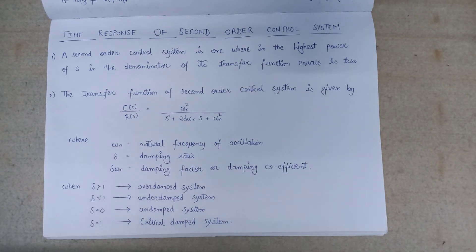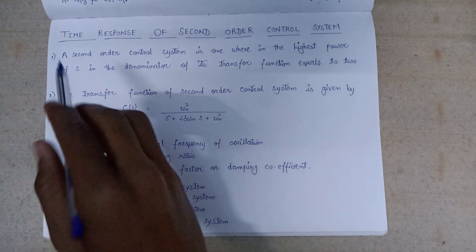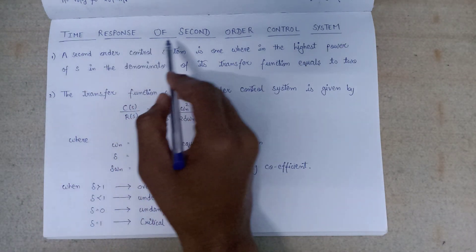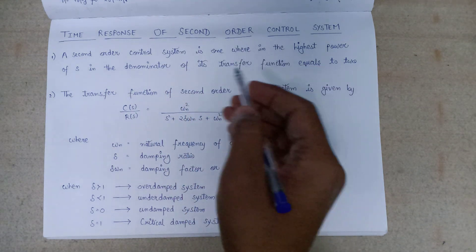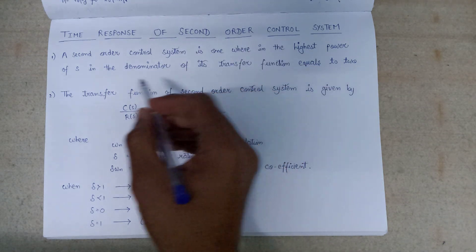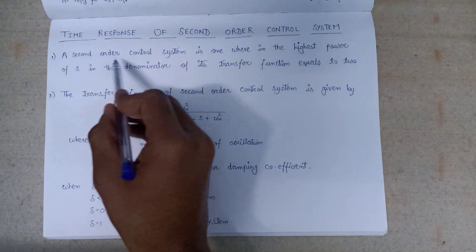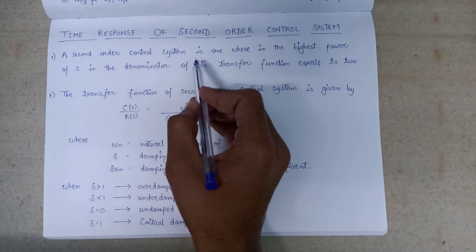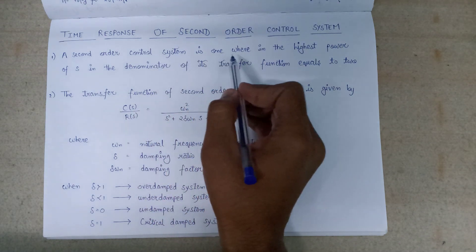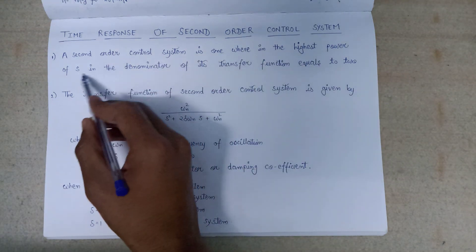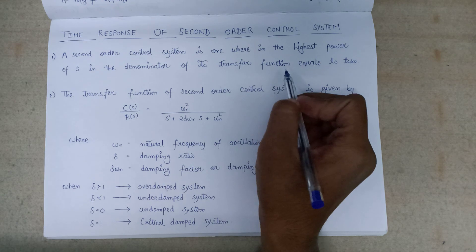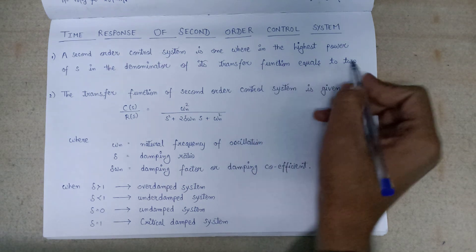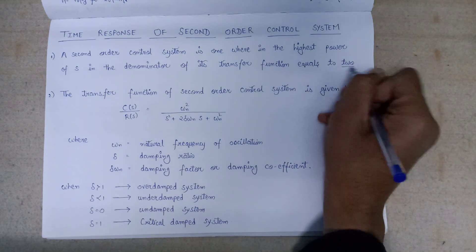Welcome all. In this lecture, we are going to study the time response of a second order control system. A second order control system is one where the highest power of s in the denominator of its transfer function is equal to 2 only.